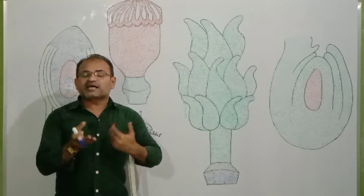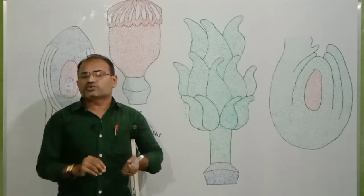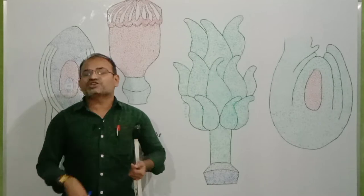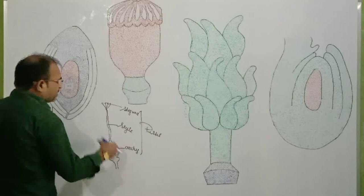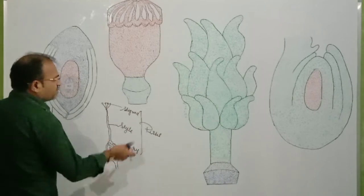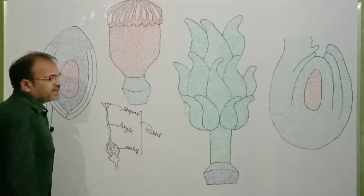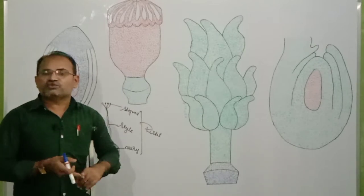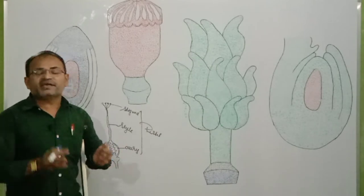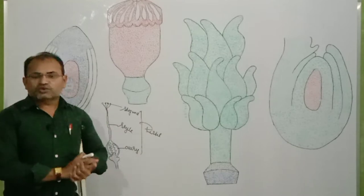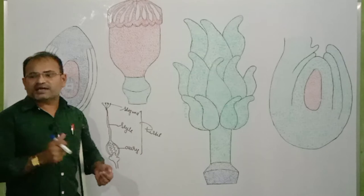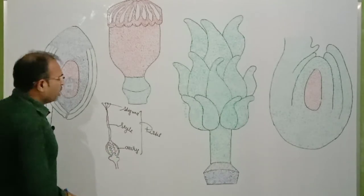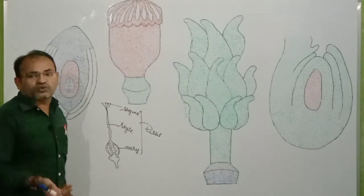When the ovary contains one ovule, it means only one seed will be formed — examples are wheat, paddy, and mango. After fertilization, when changes occur in the ovary, it will mature and convert into a fruit and then into a seed. When there are one or more ovules, many seeds will be formed — examples include orchid, papaya, and watermelon.